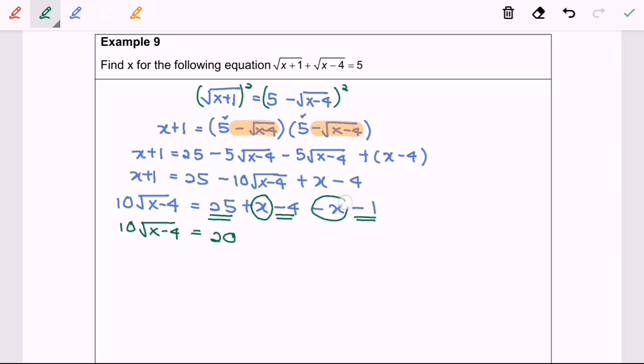10 square root of x minus 4. Again, we can still simplify. So we divide by 10 for both sides. Square root of x minus 4 equals 2.